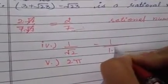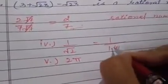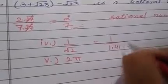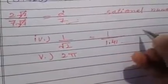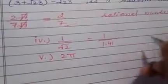1 upon under root 2, which is 1.414 something. This will work. So when you divide it will divide. How to do this in an irrational number? So you have to solve it.